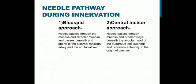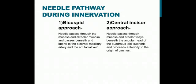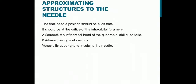There are two approaches to the infraorbital nerve block: the bicuspid approach and the central incisor approach. In the bicuspid approach, the needle passes through the mucosa and alveolar mucosa, passing beneath and lateral to the external maxillary artery and the anterior facial vein. In the central incisor approach, the needle passes through the mucosa and areolar tissue beneath the angular head of the quadratus labii superioris. In its final position, the needle should be at the orifice of the infraorbital foramen, beneath the infraorbital head of the quadratus labii superioris, and above the origin of the caninus muscle, with the vessels lying superior and mesial to the needle.